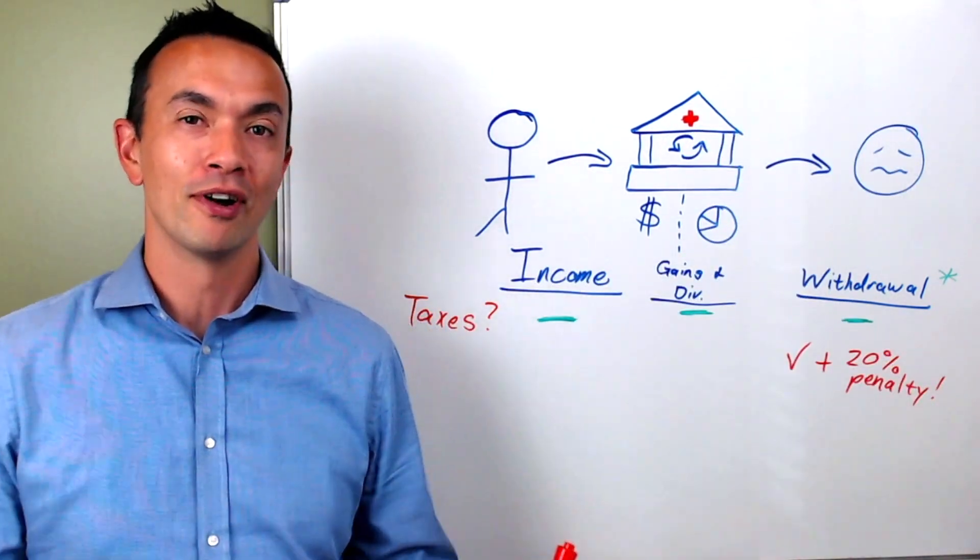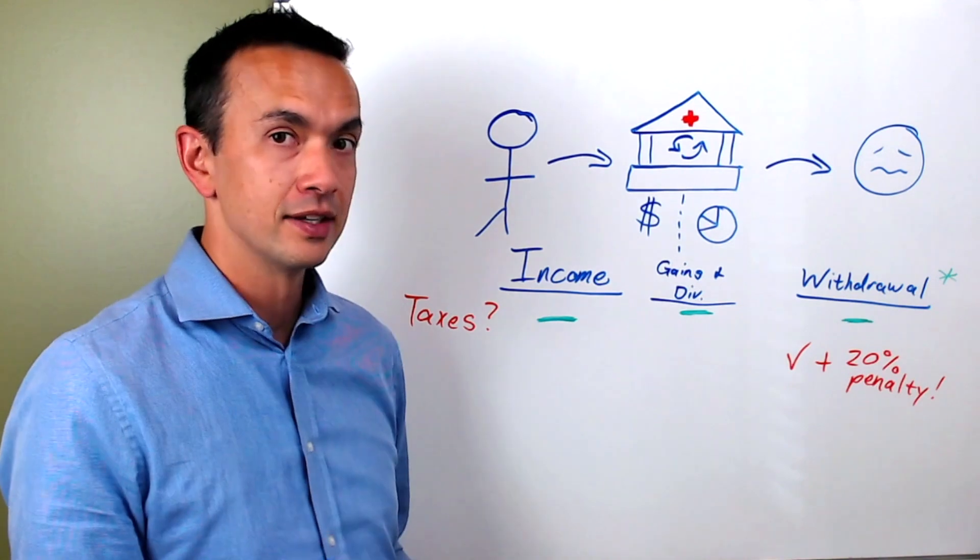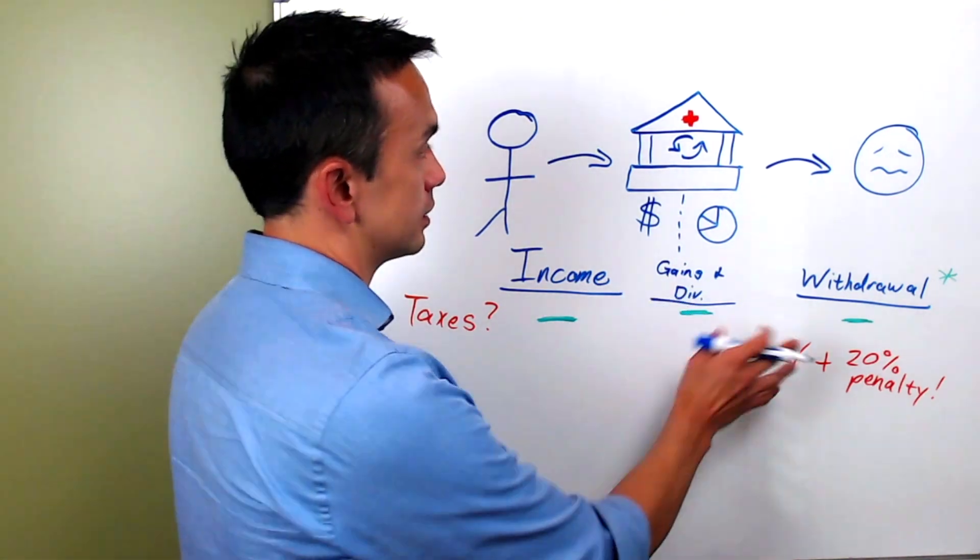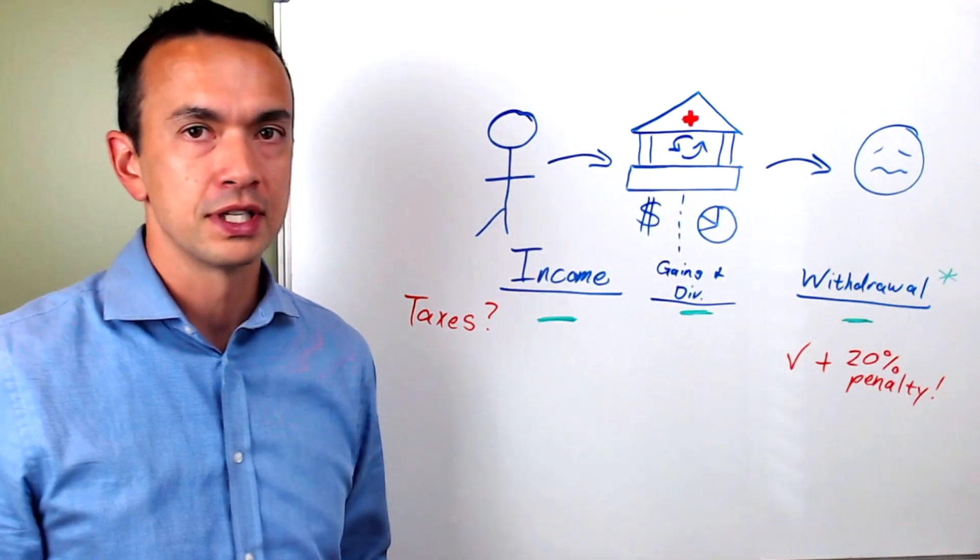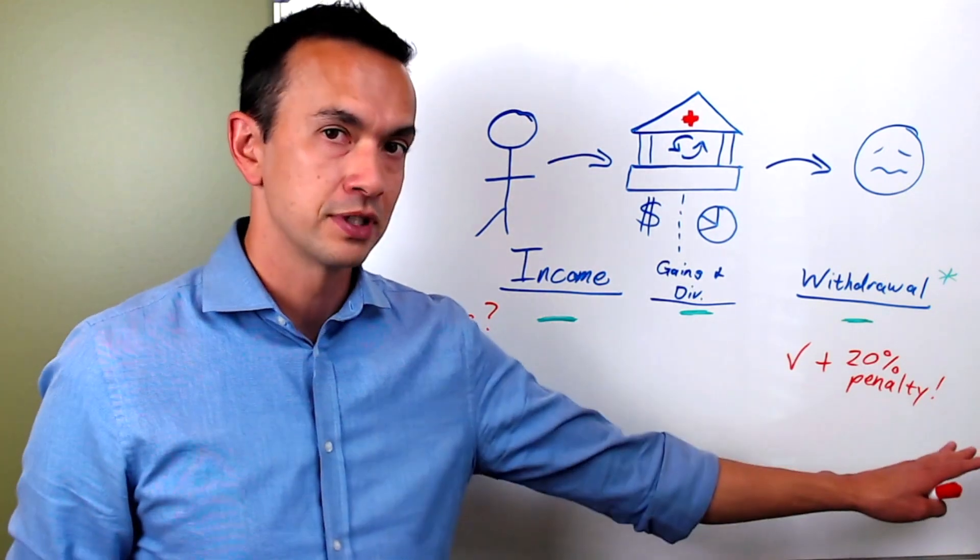Now the secret part that people aren't as aware of is the rule that as soon as you turn 65 years old, this 20% penalty goes away.